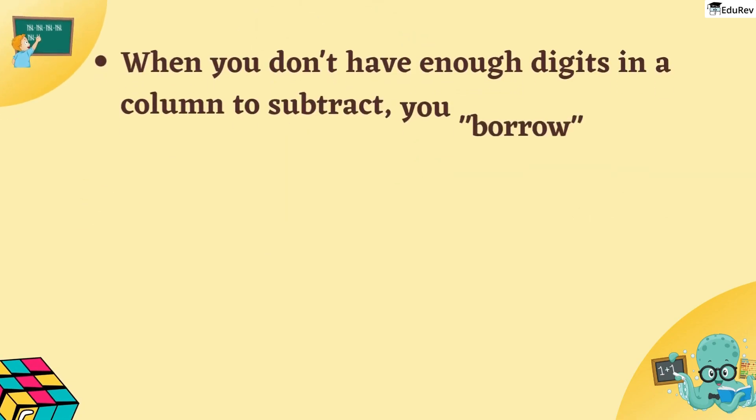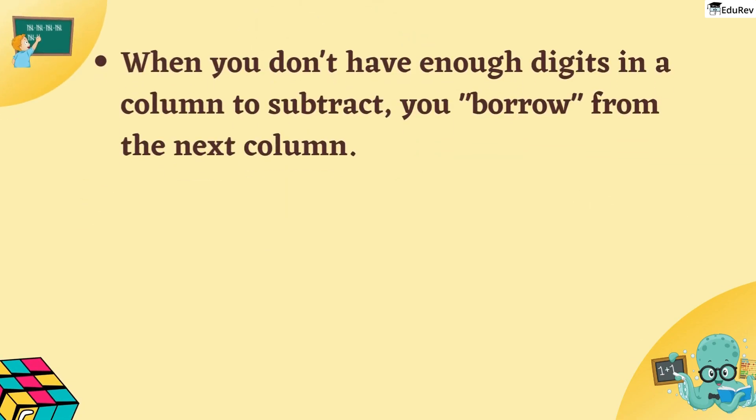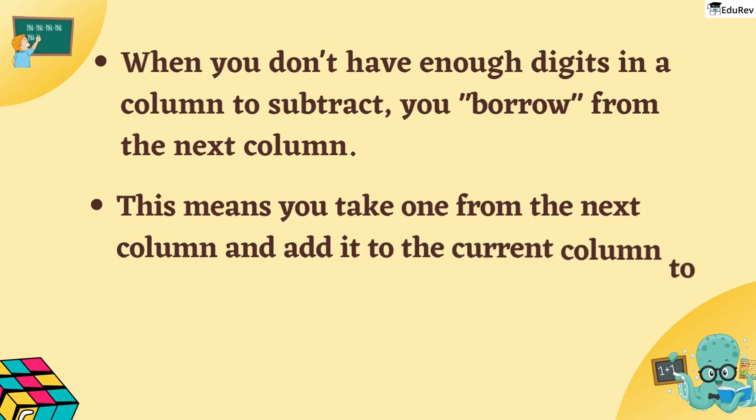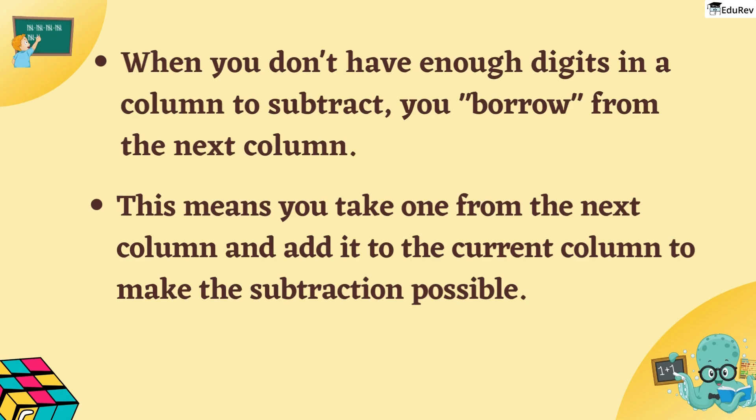when you don't have enough digits in a column to subtract, you borrow from the next column. This means you take 1 from the next column and add it to the current column to make the subtraction possible. It is also known as regrouping. Let us look at an example to understand borrowing.